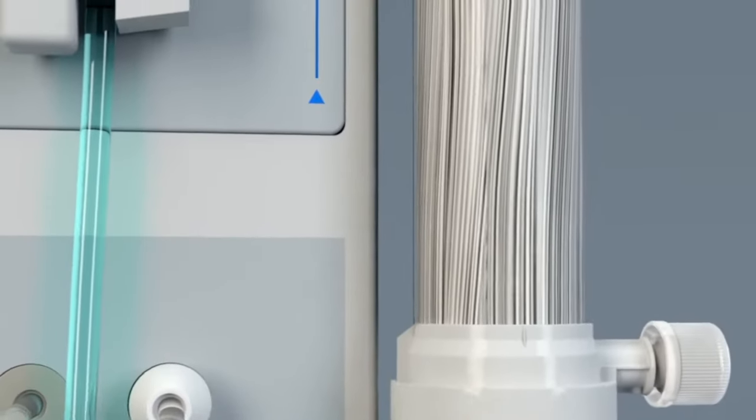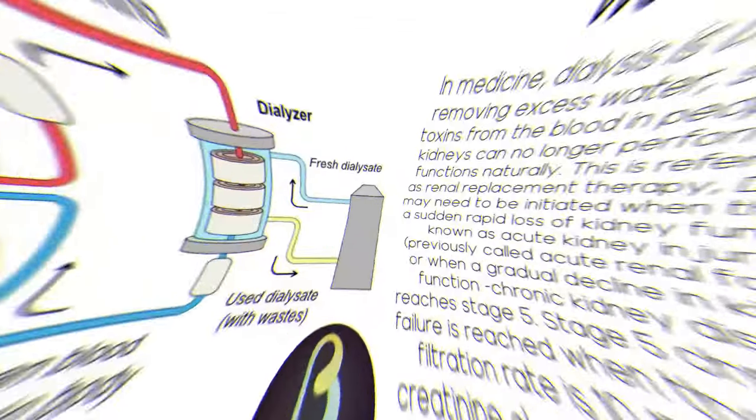How the dialysis machine works. The dialysis machine draws up and warms purified water to physiological temperatures. The heated water then undergoes deaeration under vacuum to prevent dissolved air from coming out of solution as negative pressure is applied during dialysis.